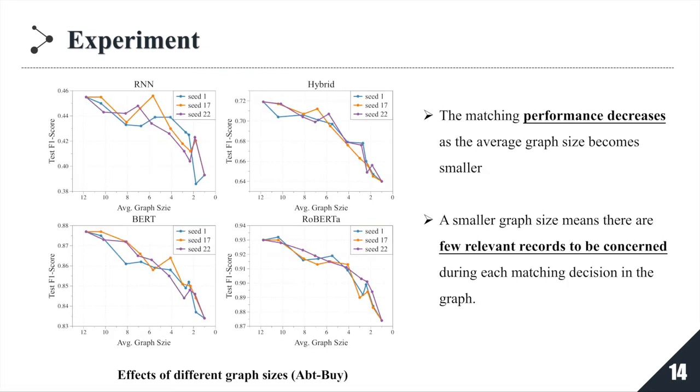To further understand our framework, we randomly split the node set in the graph into several parts to decrease the average graph size during the test stage. We choose three different seeds to partition all the graphs in different ways and report the respective results. We can find that the matching performance decreases as the average graph size becomes smaller, which follows our intuition because a smaller graph size means there are fewer relevant records to be concerned during each matching decision in the graph.